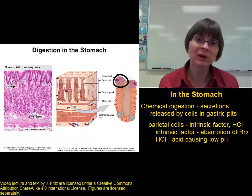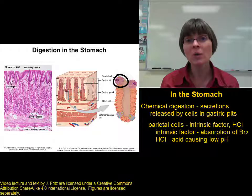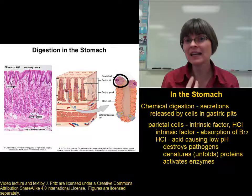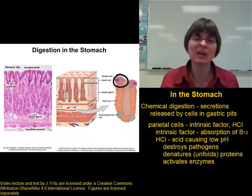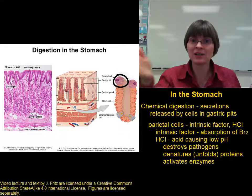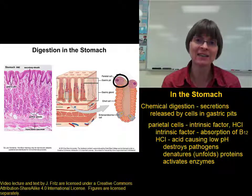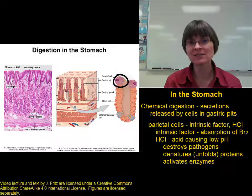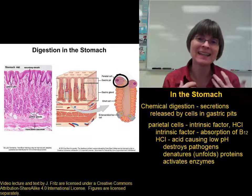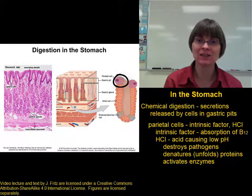A lot of people think that stomach acid breaks down molecules, but in fact it doesn't do much chemical digestion. What HCl is important for is destroying pathogens, denaturing or unfolding proteins — which is essential before enzymes can break them apart — and activating enzymes. There are a number of enzymes made inside cells and secreted into the stomach or intestinal lumen in an inactive form, and the low pH of the hydrochloric acid can activate those enzymes.